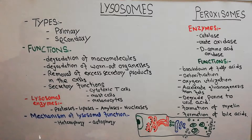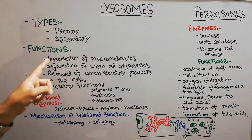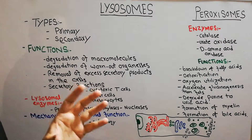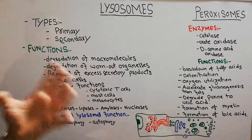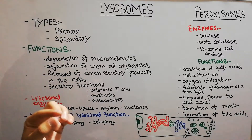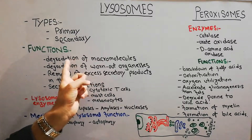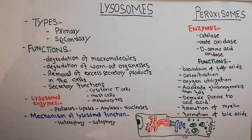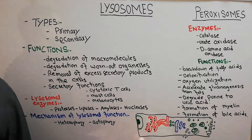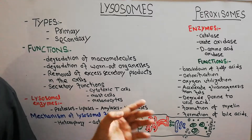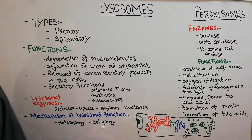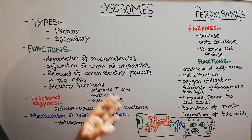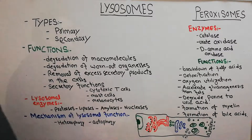The basic functions of lysosomes: first, they degrade macromolecules — lipids, carbohydrates, and proteins are broken down into small particles inside the cell. Second, degradation of worn-out organelles: if a mitochondrion or any other organelle inside the cell is not functioning and is useless, it is degraded through the lysosome. When initially discovered, lysosomes were also called 'suicide bags,' and they are also known as the garbage system of the cell because they remove waste.